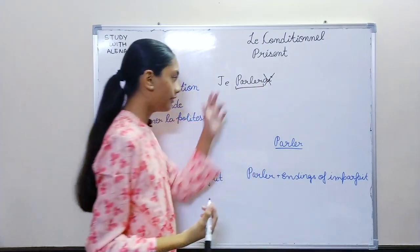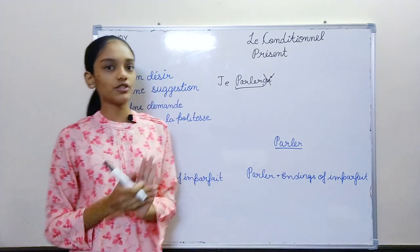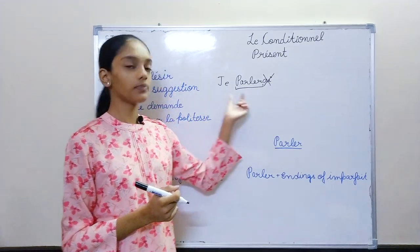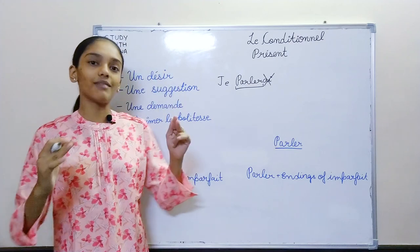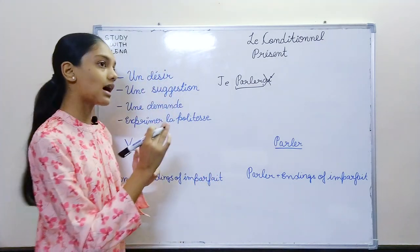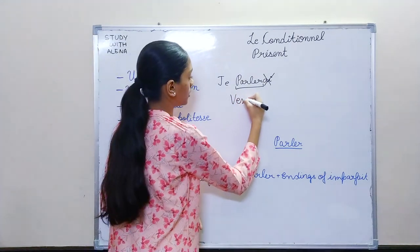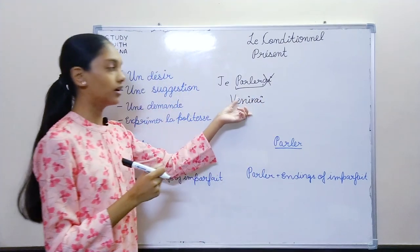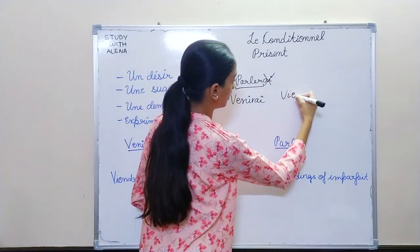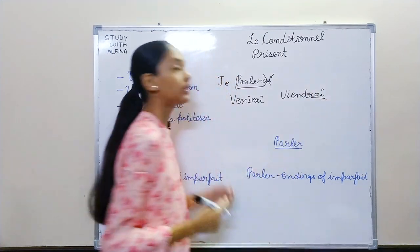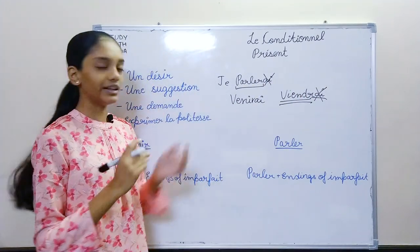Whatever we are left with will be the verb we use for conditional present. Now, I could have just said to use the infinitive verb — but let's take the example of venir. In future simple, if you know there are some exceptions, some words are not always in the infinitive form. For example, venir — we don't write venire. We don't use the infinitive and add the endings of avoir. We use viendra, then write the endings of avoir. So when you remove the endings of avoir, what you are left with is what you use in conditional present.